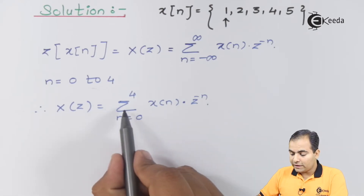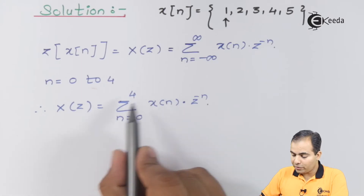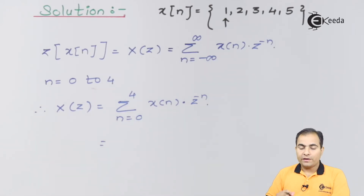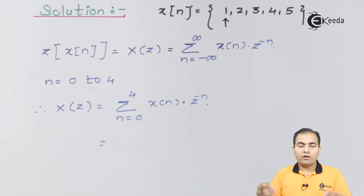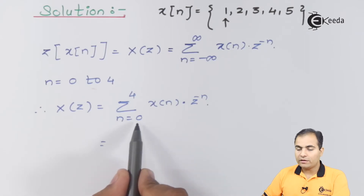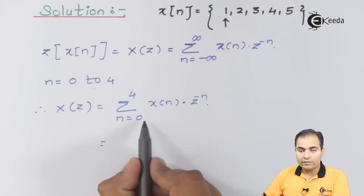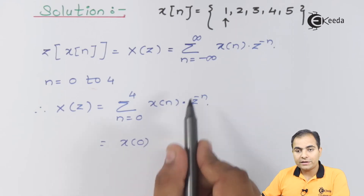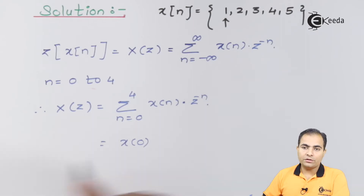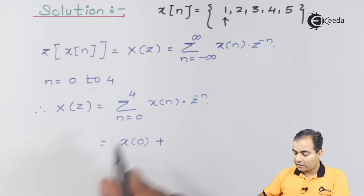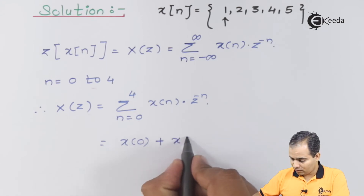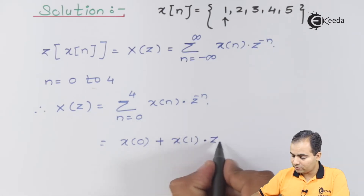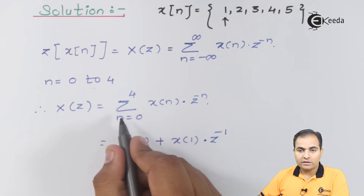Now I am going to expand this summation — that is, express it as the addition of all individual sample contributions. Substituting n=0: x[0] times z^0 = x[0] times 1 = x[0]. For n=1: x[1] times z^(-1). We continue expanding similarly up to n=4, giving us x[0] + x[1]z^(-1) + x[2]z^(-2) + x[3]z^(-3) + x[4]z^(-4).